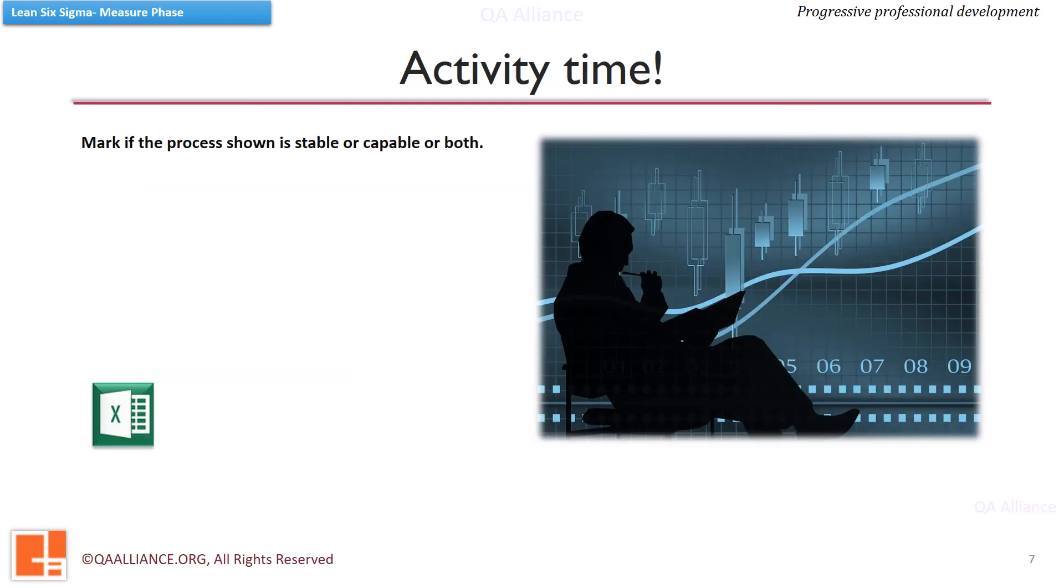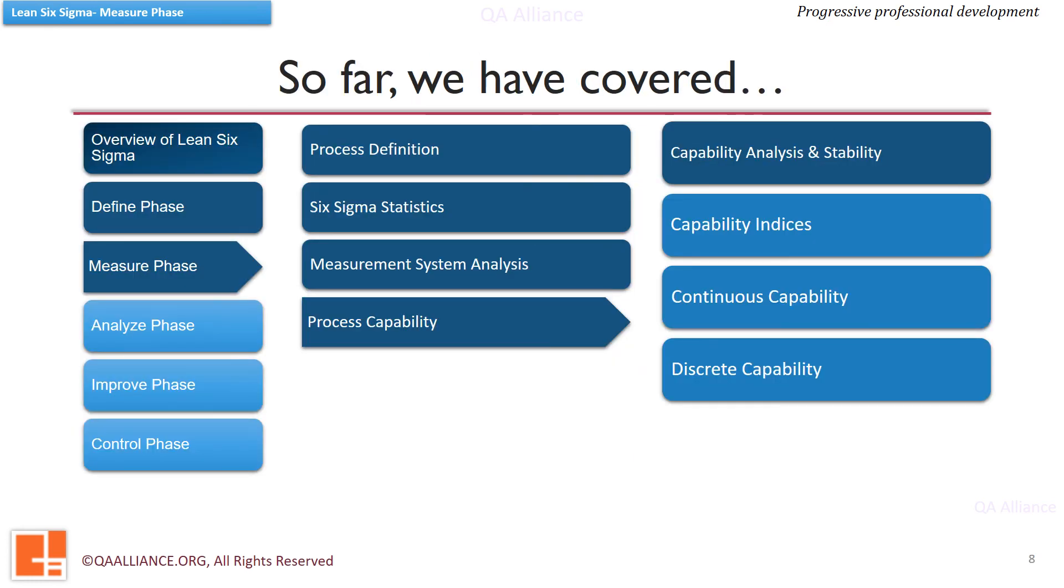Here is a small exercise for you. We have provided a few scenarios in the Excel workbook, where you need to identify each of them as stable process, or capable process, both stable and capable process or none. Now we will move to the next lesson.